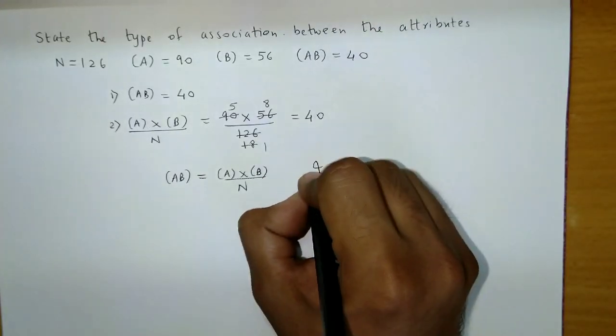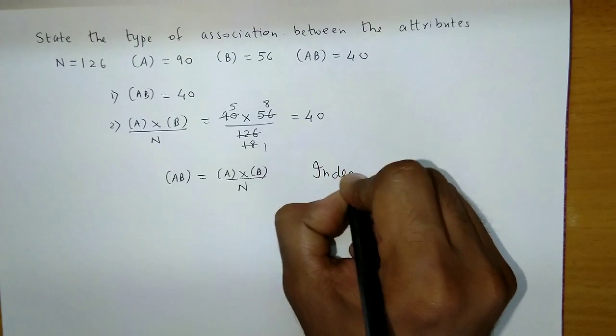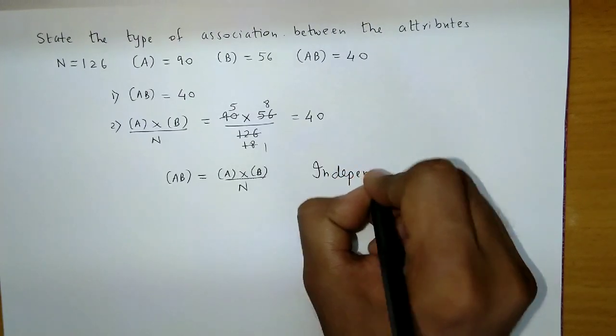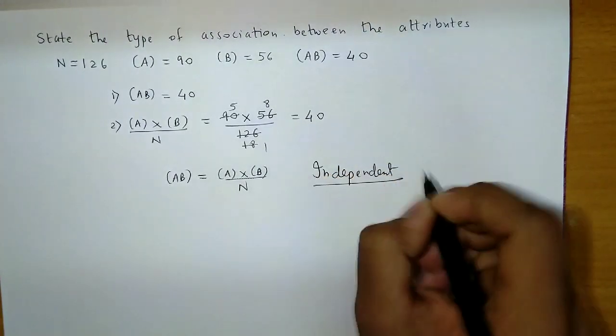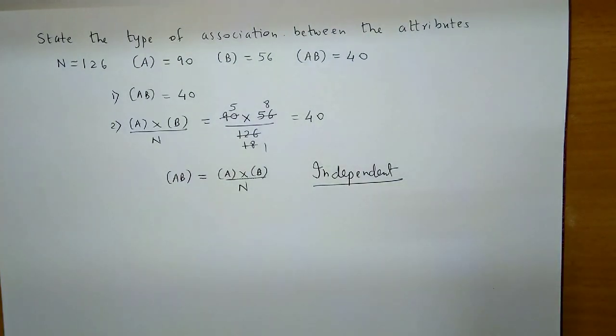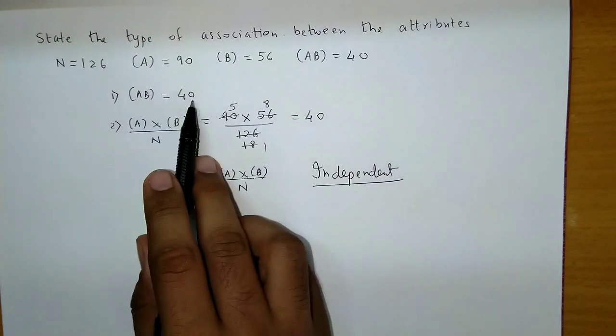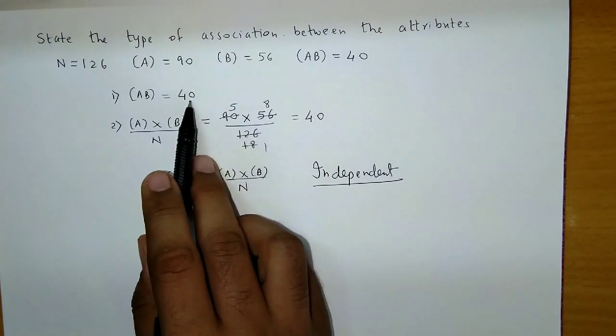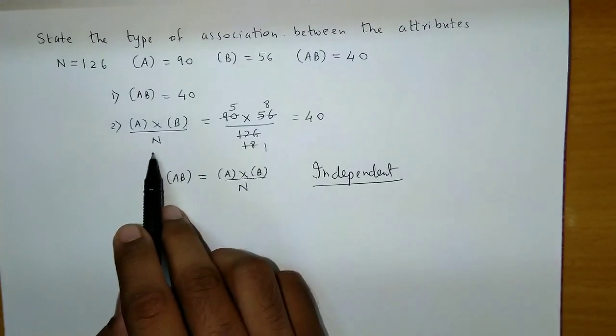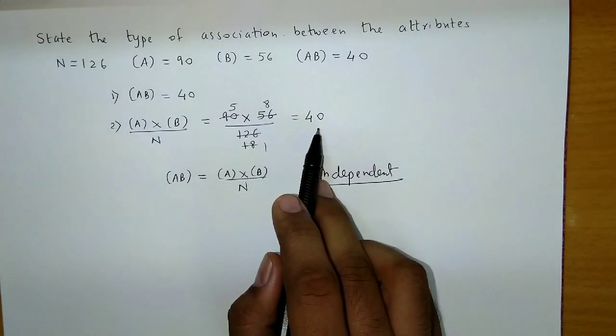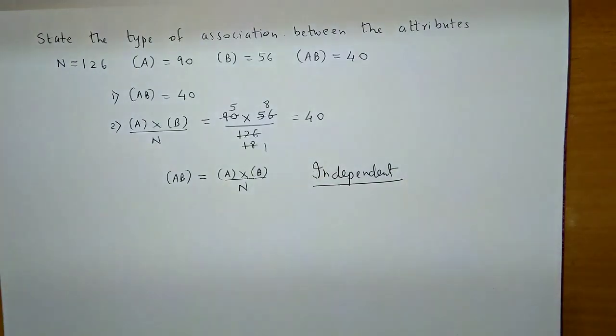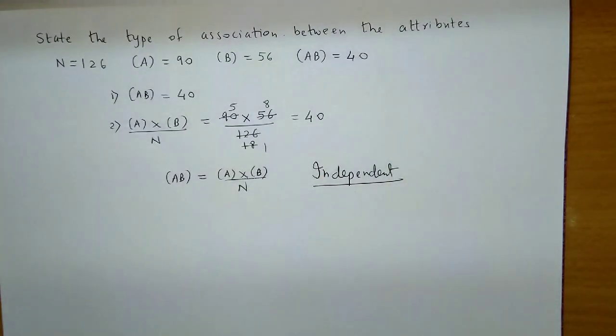So, hence, we could say the attributes are independent. Here, we have used the comparison method to identify the association between the attributes. The AB frequency was 40. We compared it with A into B upon N. It also comes 40. Now, since both are equal, hence we say the attributes are independent.